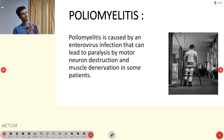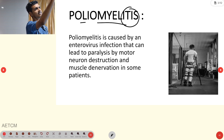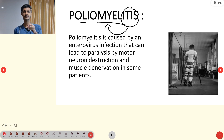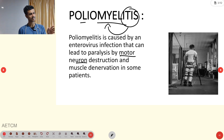As usual, first we'll segregate the term and look at the name. So poliomyelitis — what is meant by myelitis? Myelitis means inflammation of the spinal cord. Because of that spinal cord inflammation, it more specifically affects the motor nerve, causing motor neuron destruction and muscle denervation.